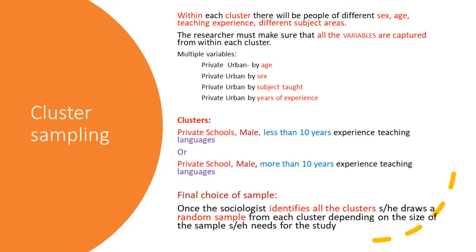So the multiple variables would be: private urban by age, private urban by sex, private urban by subject area, or private urban by years of experience. Therefore, the clusters can be: private schools, male, less than 10 years of experience, teaching languages; or private schools, male, more than 10 years of experience, teaching languages. You must have guessed that there will be many more clusters similar to these ones.